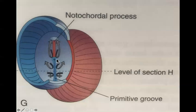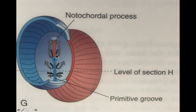Some of the primitive node cells aren't going to form mesenchyme or mesoderm. Some of them are going to migrate out to the sides and up, going all the way around to the front of the precordal plate from both sides. These cells meet in the middle in an area called the cardiogenic area, where they differentiate into cardiac tissue and begin to form the heart, which starts developing at the end of the third week.